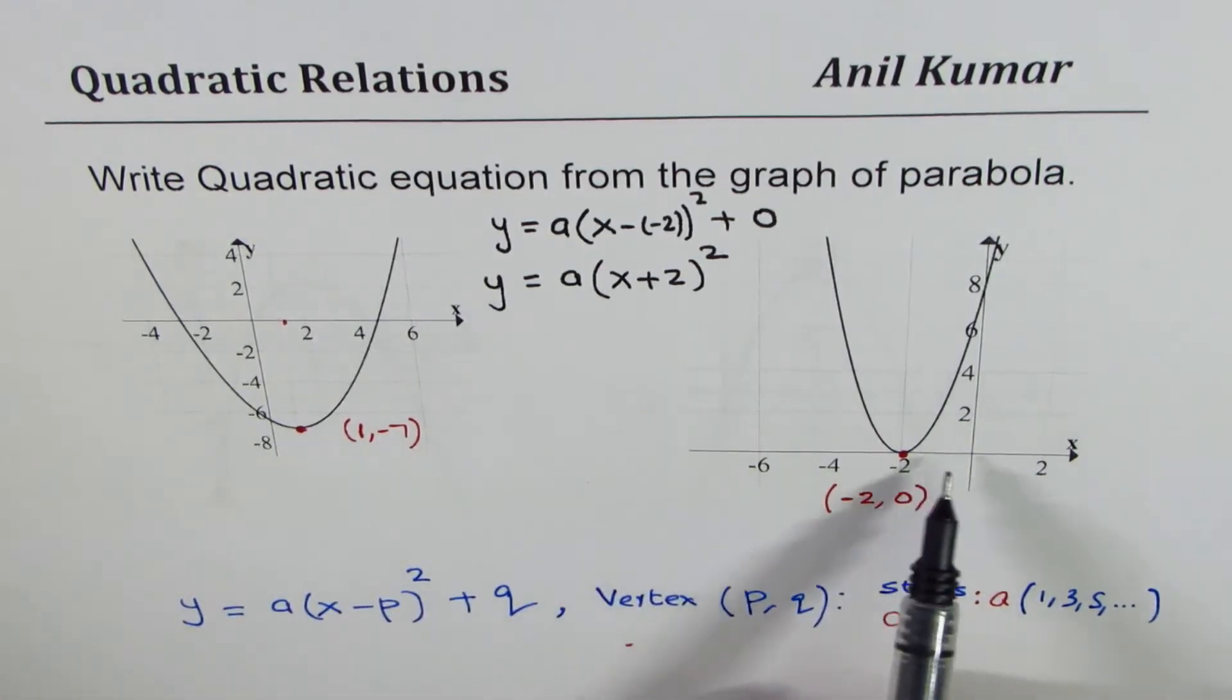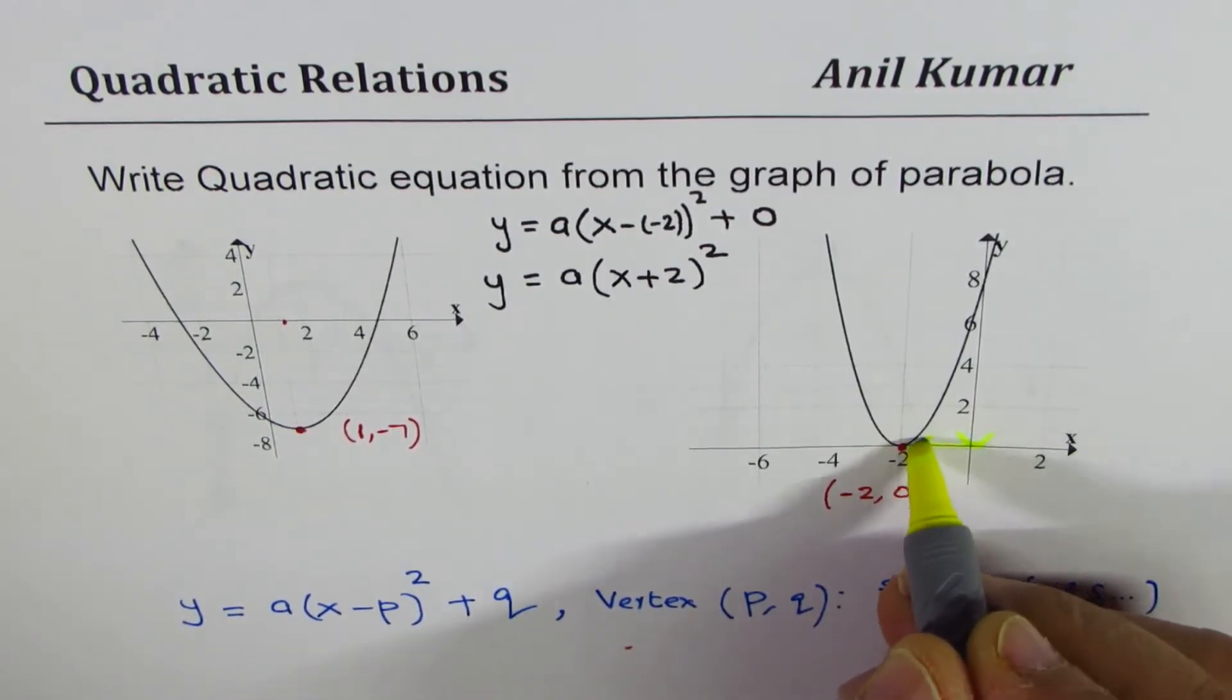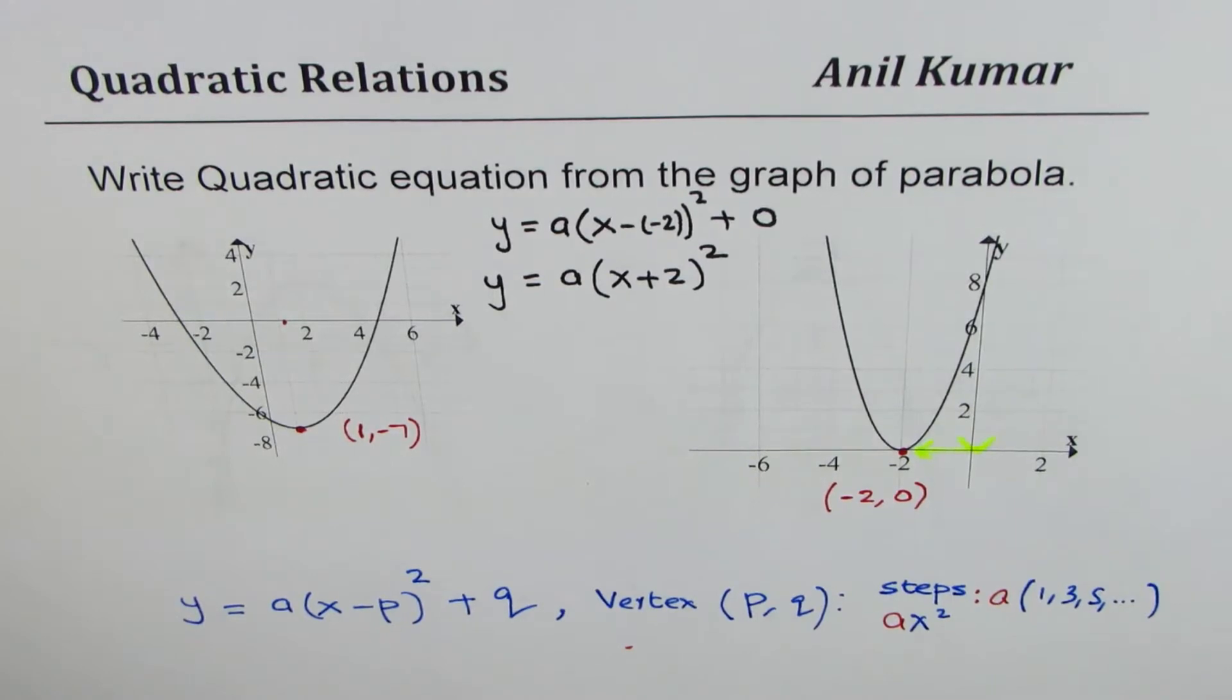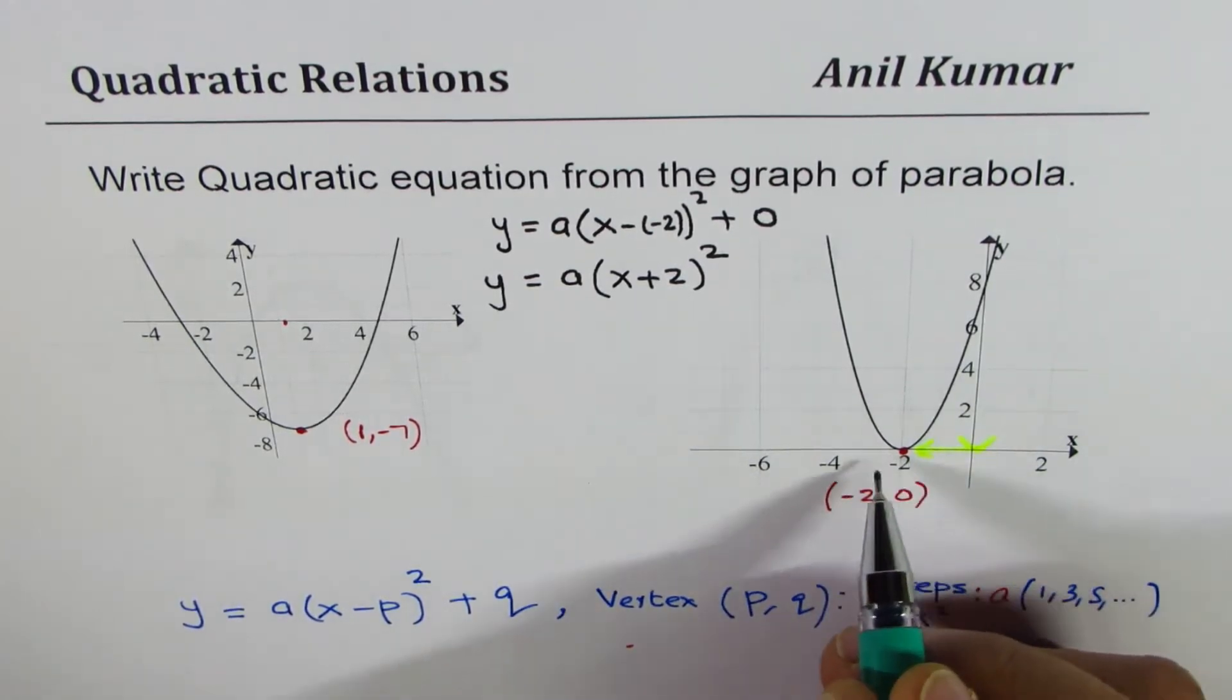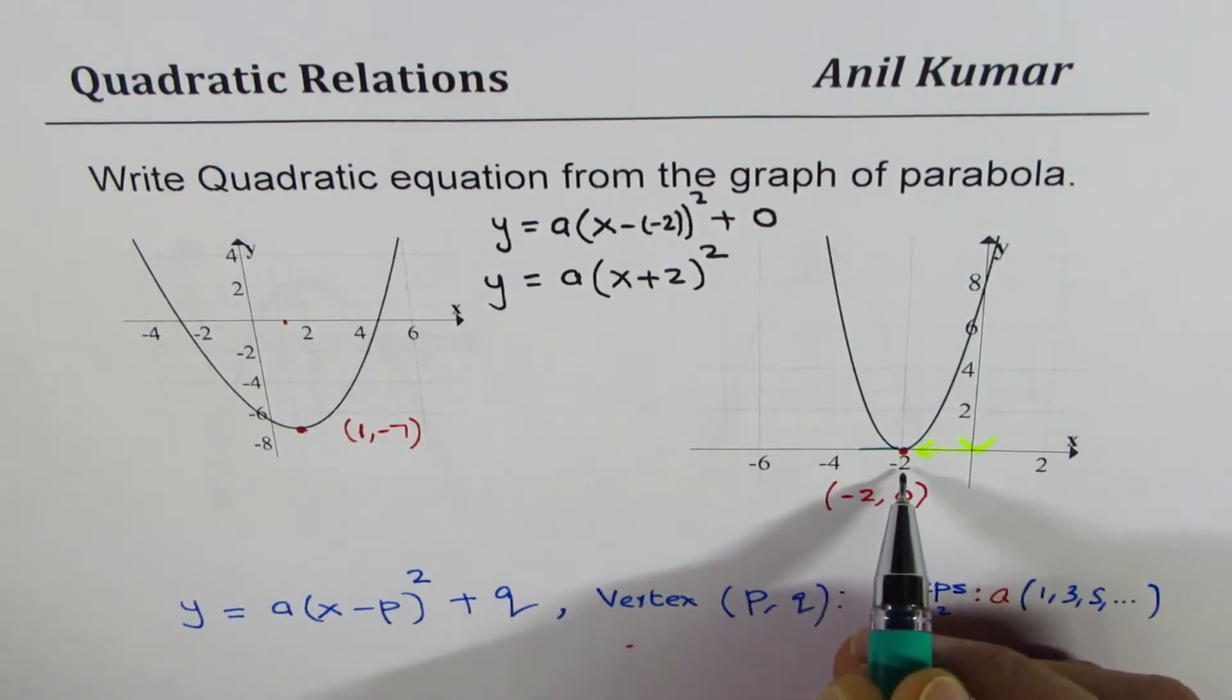So plus 2 means that the parabola has been shifted two units left which you can see very clearly. Normally the parabola would have been here, now it has been moved two units left. Now let's talk about these steps.